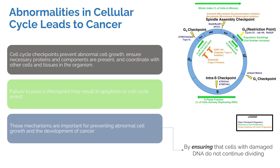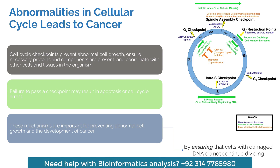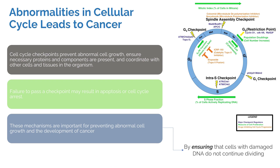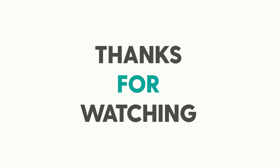These mechanisms are important for preventing abnormal cell growth and cancer development, because they ensure that cells with damaged DNA do not continue dividing. If a gene has mutated inside a cell and it is growing uncontrollably but the checkpoint genes and proteins are functioning properly, they will ensure that the damaged cell with damaged DNA should not grow further.